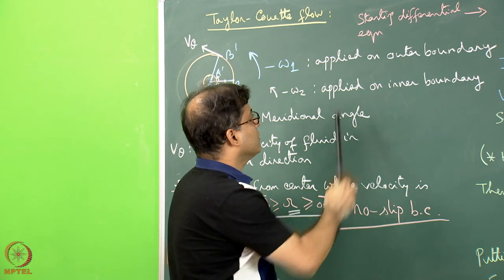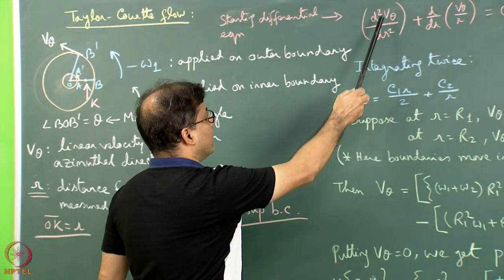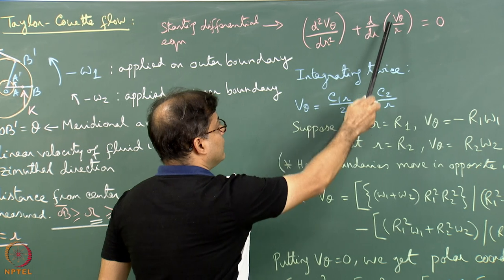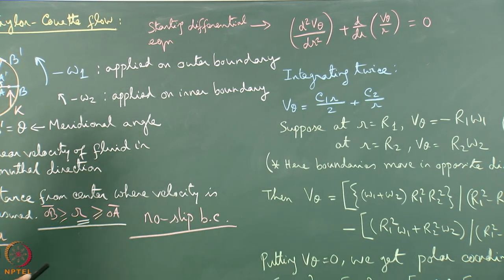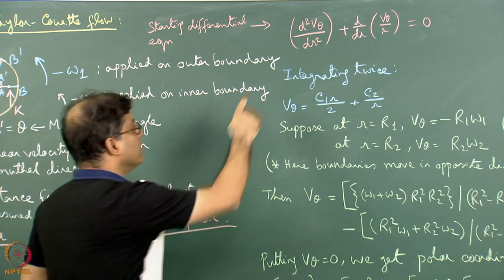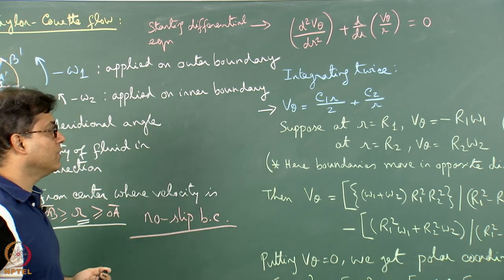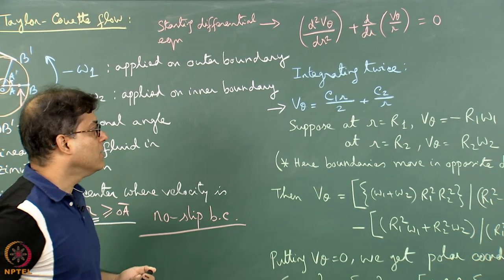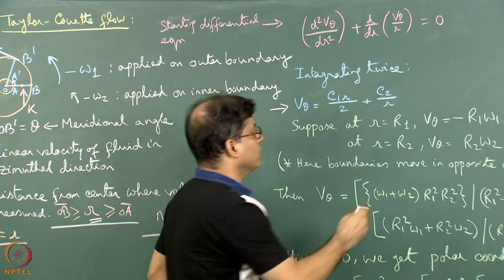We write down the starting differential equation as d²(V theta)/dr² + (d/dr)(V theta / r) = 0. Integrating this equation twice gives V theta = C1·r/2 + C2/r, where C1 and C2 are the integration constants.